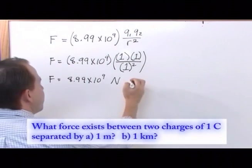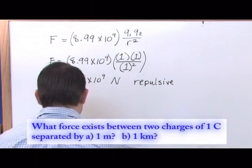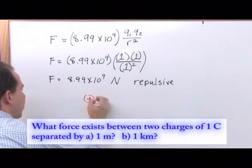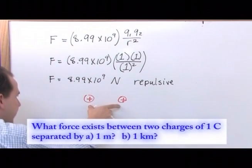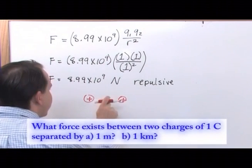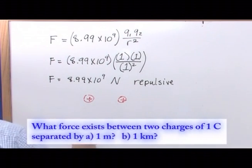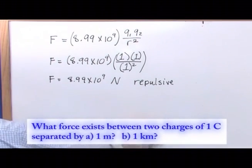So, this force is repulsive. Right, and just really briefly, this means that if I had my charge here, and I had my charge here, and this was one coulomb, and one coulomb, and this was one meter, then the force would be 8.99 times 10 to the 9 newtons, pushing outward. It would be repulsive. They would be trying to move apart from one another.